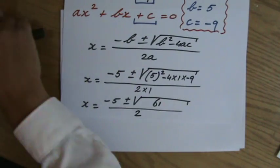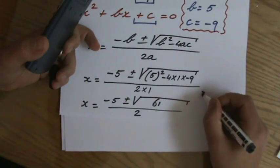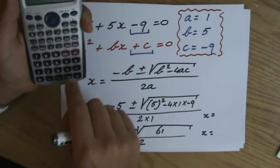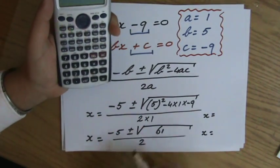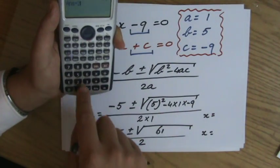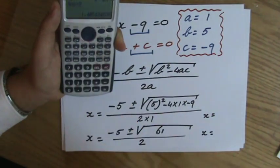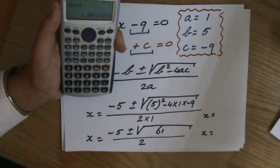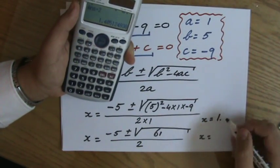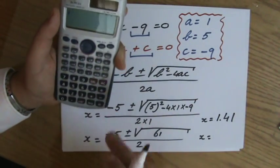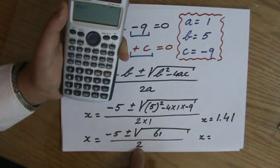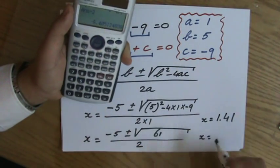I'm going to get two values for x. I'm going to grab my calculator here. Minus five - I always do plus first - minus five plus the square root of 61 equals, and all of that divided by two equals. I remember I had to correct my answer to two decimal places, and if I do that correctly, it's 1.41. That's my first answer. My second answer: minus five, now I'm going to do minus the square root of 61 equals, divided by two equals, and to two decimal places: minus 6.41.